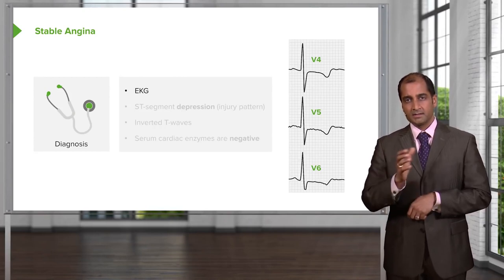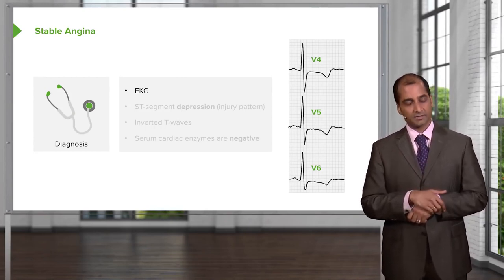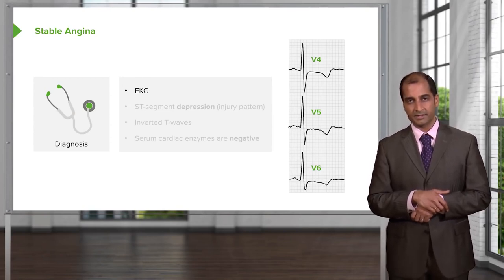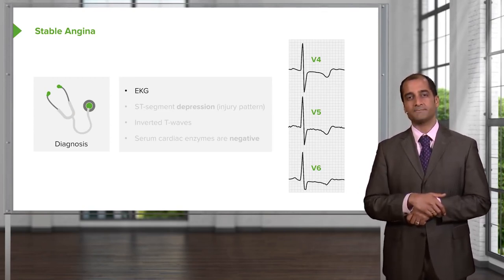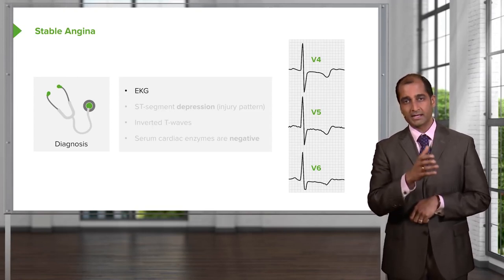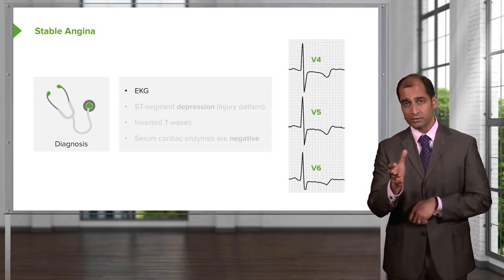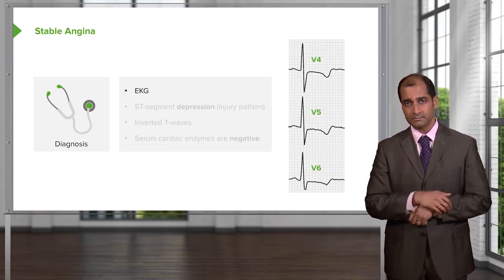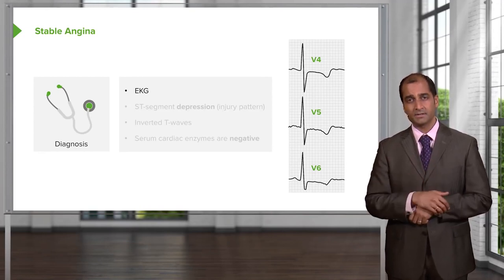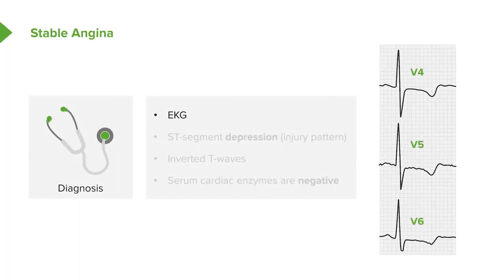Let's take a look at the EKG changes — very important to understand. Starting at the top: stable angina. The patient says, 'Hey doc, I have pain upon exertion.' The patient comes in, you do an EKG at rest — are you going to find a change? No. You induce stress, and then you find ST changes. What kind? Take a look at V4, V5, and V6.